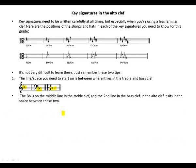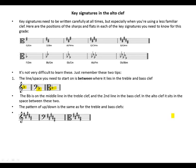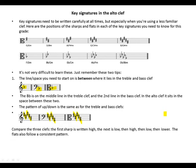For example, the first sharp (F sharp) is on the middle line in the treble clef and on the second line in the bass clef — in the alto clef it sits in the space between these two. The pattern of up-down is the same as for the treble and bass clef. Compare the three clefs: the first sharp is written high, the next is low, then high, then low, then lower. The flats also follow a consistent pattern.